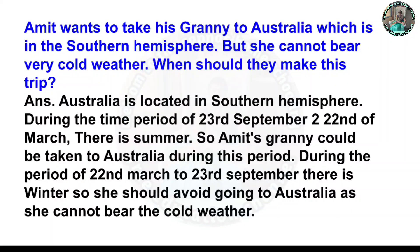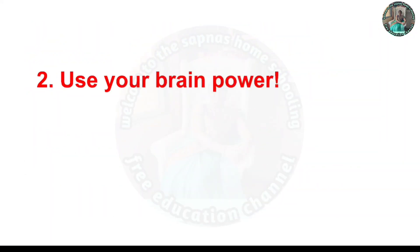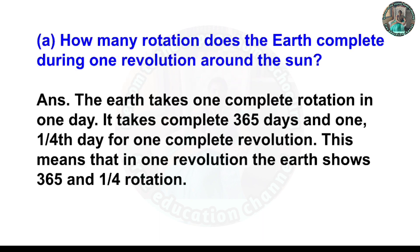Use Your Brain Power: How many rotations does the Earth complete during one revolution around the Sun? The Earth takes one complete rotation in one day. It takes 365 and one-fourth days for one complete revolution. This means that in one revolution, the Earth completes 365 and one-fourth rotations.